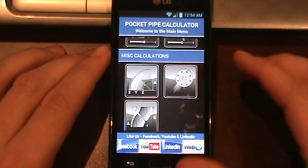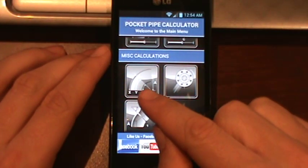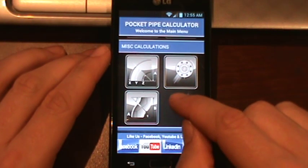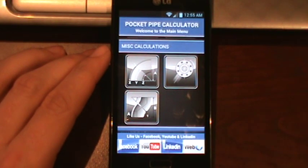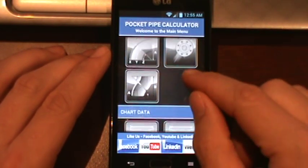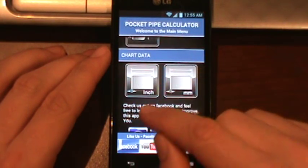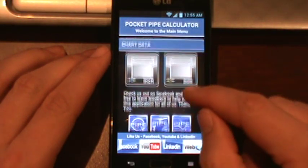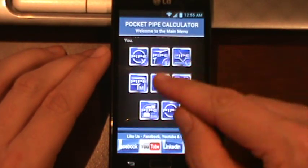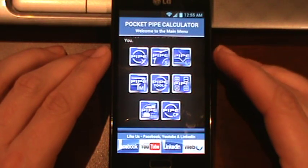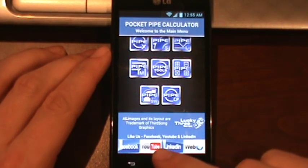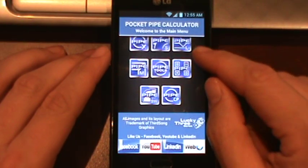You scroll down, you have miscellaneous calculations. This is for takeout of any angle fitting. You've got a two-hole alignment for flanges. And then you've also got just a back-to-back fitting if you want to know what the takeout is. We have chart data, basically in inches for imperial, and then we have millimeters for metric. You'll also see our shortcut buttons for the other applications. And then, of course, on the bottom row we have a link to our Facebook page, our YouTube page, LinkedIn, as well as our website.